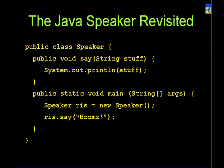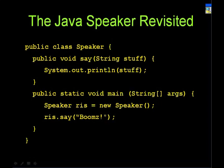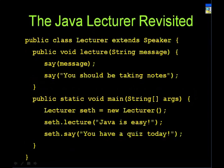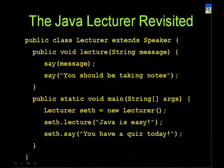Here is your Speaker class. You create a new object with 'new Speaker()'. Notice that here you did not define the constructor — if you don't define one, Java does it automatically. You create a new speaker, call the 'say' method and pass in 'booms', so it will print out 'booms'. For Lecturer, you create a lecturer named Seth — who will probably teach you the next Java course. Seth calls the lecture method, and since Lecturer extends Speaker, you can also call 'say' directly on Seth even though 'say' was defined in Speaker.